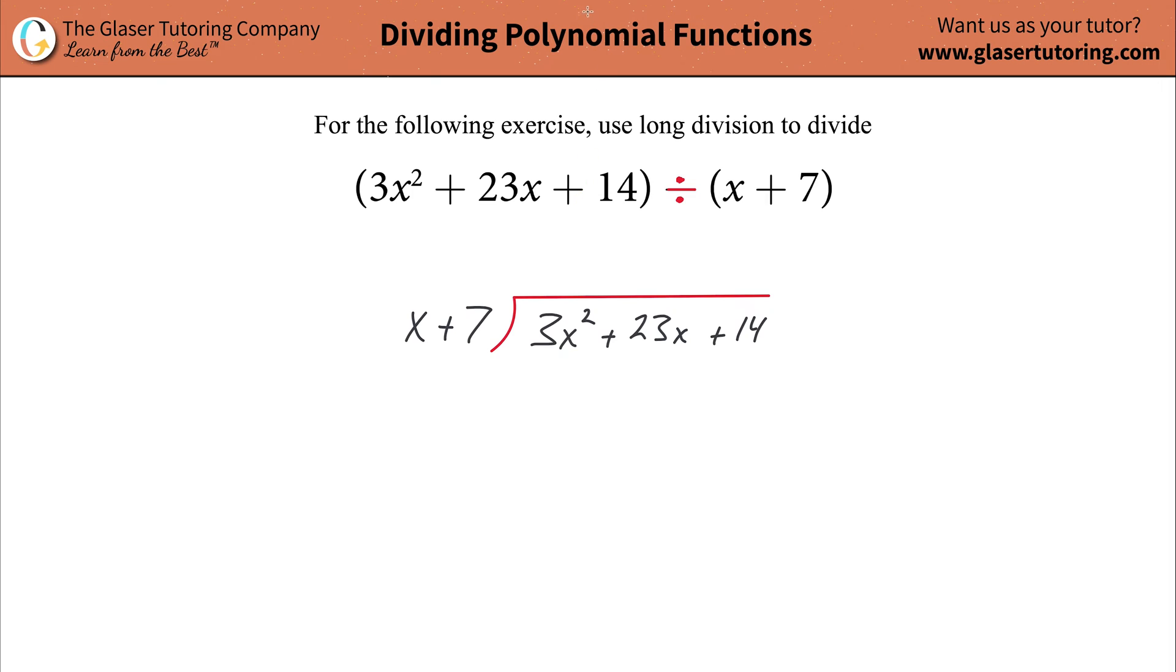Now let's take this step by step. The first step is to look at your divisor and identify the highest x value, meaning the highest x-powered value. Here we have x to the first, and I'm going to take this x to the first and divide that into the highest x power inside the long division symbol, the dividend. I'm going to take x to the first and divide it into my 3x squared.